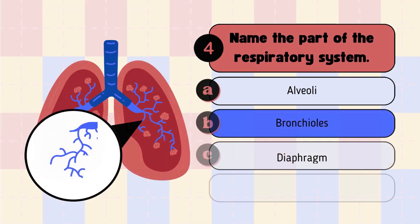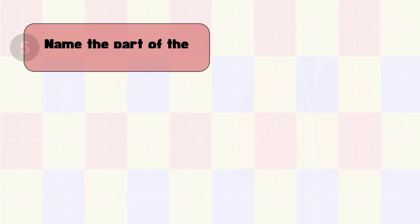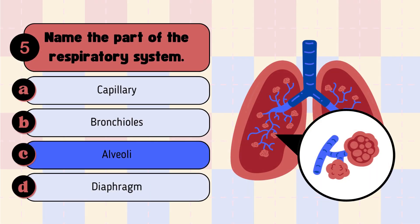The answer to question 4 is option B, bronchiolus — the bronchi branch into smaller tubes called bronchiolus, as highlighted in this diagram. The answer to question 5 is option C, alveoli — the bronchiolus leads to millions of smaller tubes called alveoli where the normal gaseous exchange takes place, as you can see in this diagram.